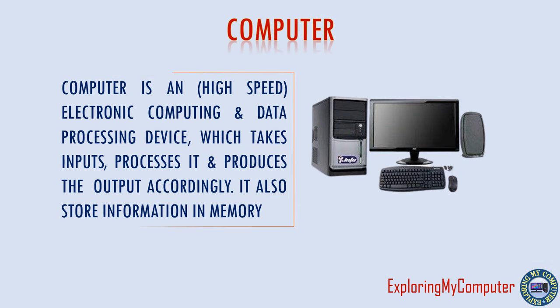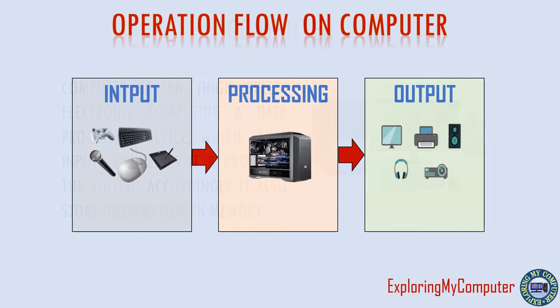A computer is a high-speed electronic computing and data processing device, which takes inputs, processes it and produces the output accordingly. It also stores information in memory. This diagram shows the basic operation flow of a computer: input, processing and output.